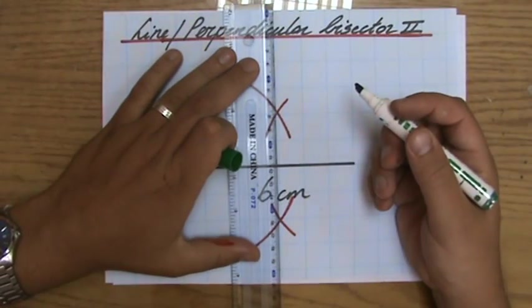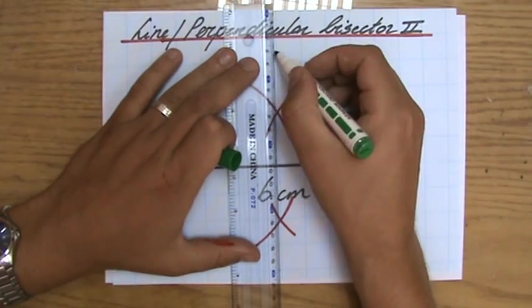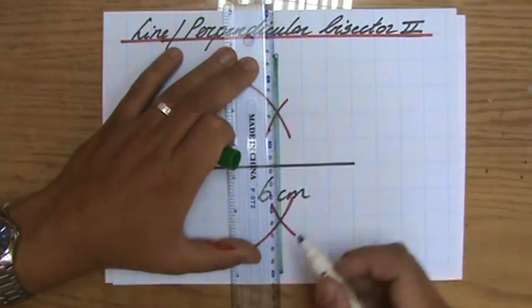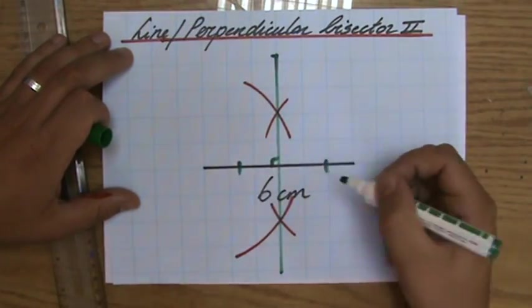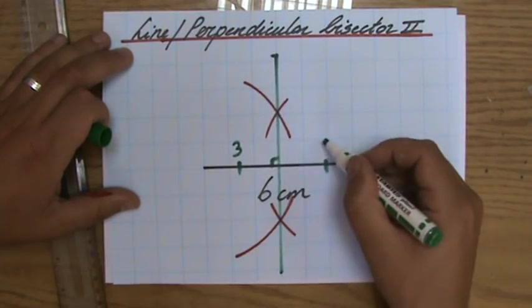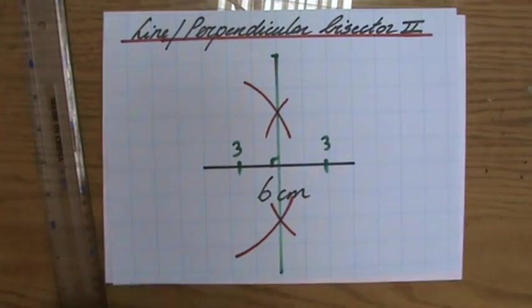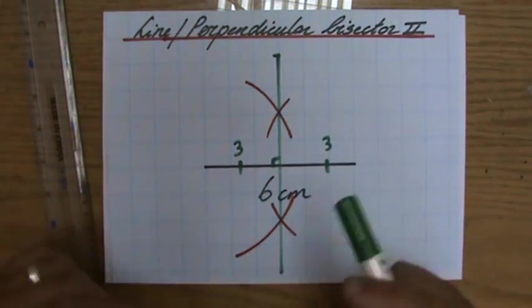And then those two points of intersection I am going to connect because that is my perpendicular bisector. This is my line bisector, boom, there we go. 90 degrees, three centimeters, three centimeters. So I've divided the line into two equal parts. Fantastic.